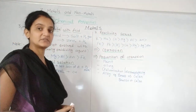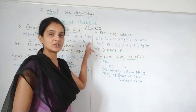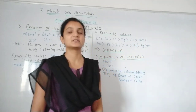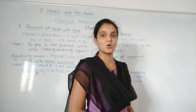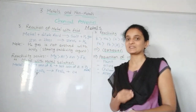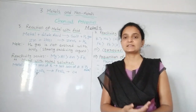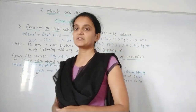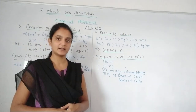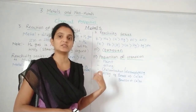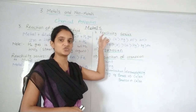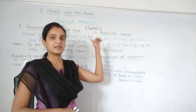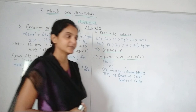Now let's move to the fifth property — the reactivity series. The most reactive metal is potassium, and the least reactive metals are silver and gold. That is why we prepare jewelry from silver and gold — because their reactivity with water, oxygen, and acids is very low, so they can remain as-is for a longer time. The most reactive metals are potassium and sodium, followed by calcium, magnesium, and aluminum, and reactivity decreases gradually.